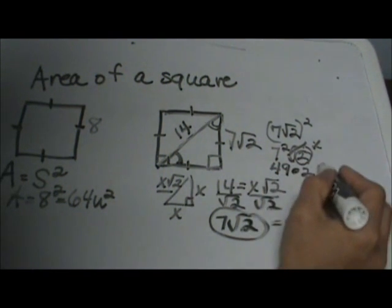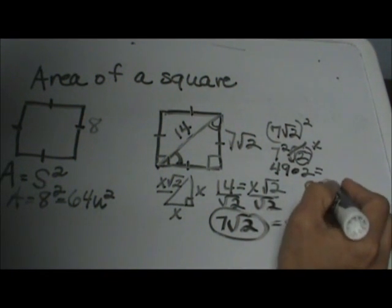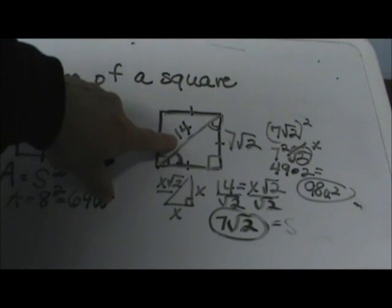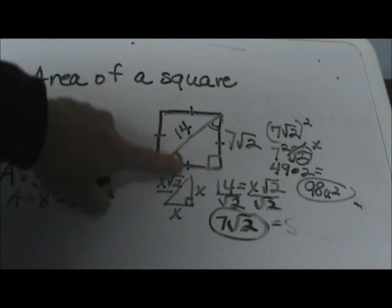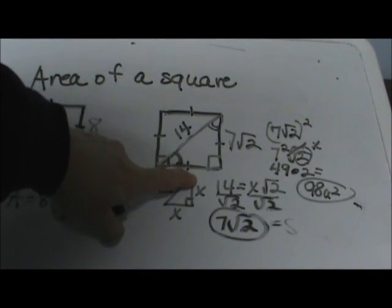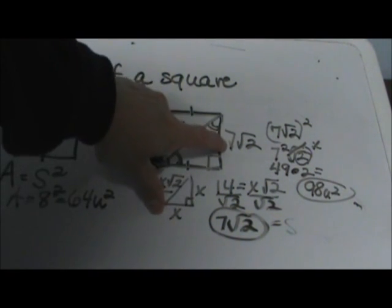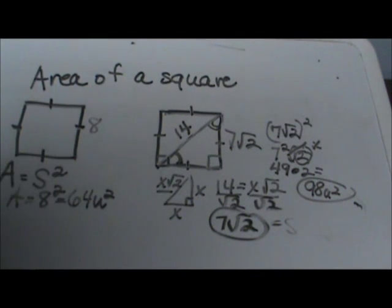So 49 times 2 is 98 square units. So that is the area of the square. And you work from the diagonal back to the side by dividing by the square root of 2, and then once you find the side you plug it into your area formula to find the area of the square.